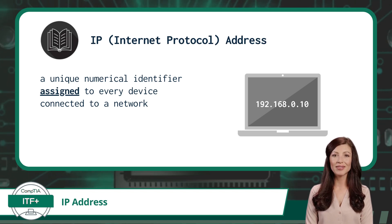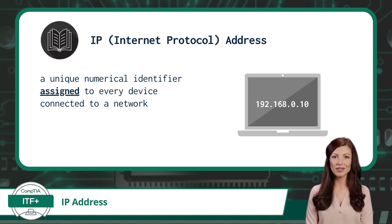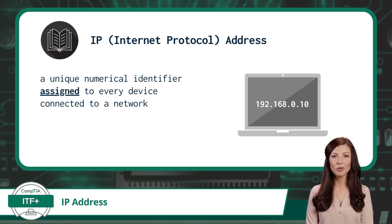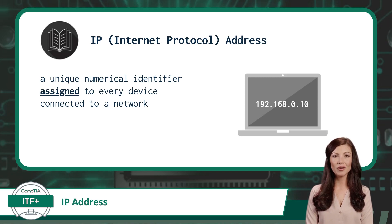First, let's define what an IP address is. IP stands for Internet Protocol, and an IP address is a unique numerical identifier assigned to every device connected to a network. The keyword here is 'assigned.' An IP address differs from a MAC address in that where a MAC address is hard-coded into a network interface card, an IP address is logically assigned, can be changed, and even reassigned as needed.